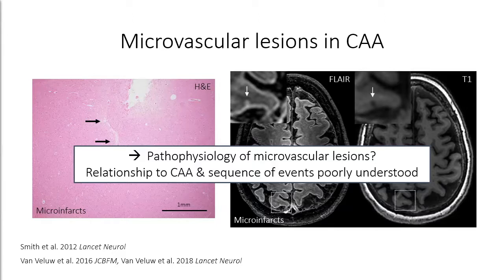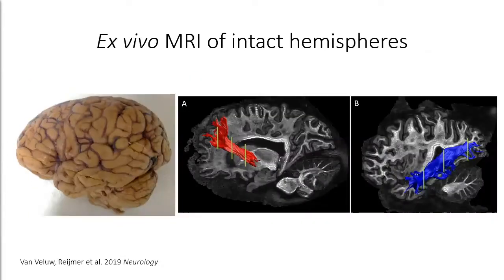But what about the underlying mechanisms of these lesions? When I came to Boston, I set out to look deeper into the pathophysiology — specifically the relationship to CAA severity and the sequence of events leading up to lesion formation. To answer those questions, we started a larger autopsy cohort study. We receive intact hemispheres of patients with a clinical diagnosis of CAA through the Stroke Research Center lab by Steven Greenberg. So far we've included 20 brains of CAA patients and about four controls, performing whole intact hemisphere scanning at three Tesla MRI in an overnight session, which allows us to look at volumetric abnormalities and do tractography with DTI.